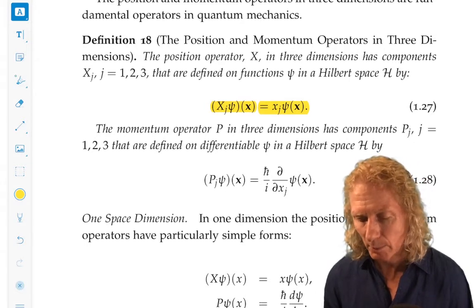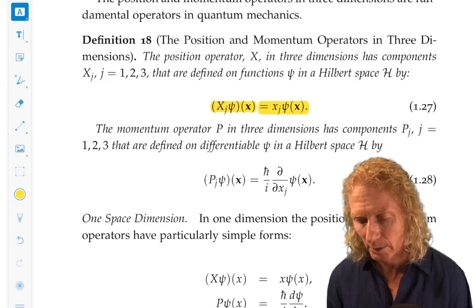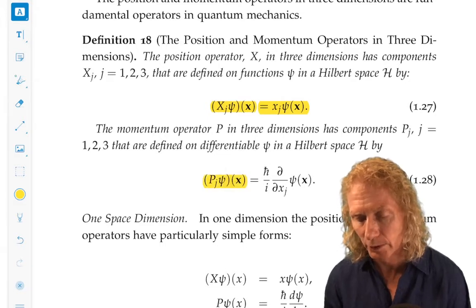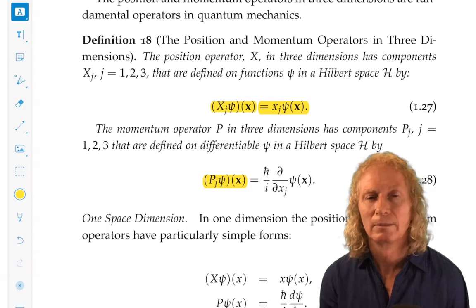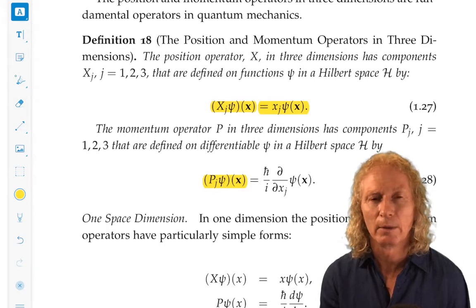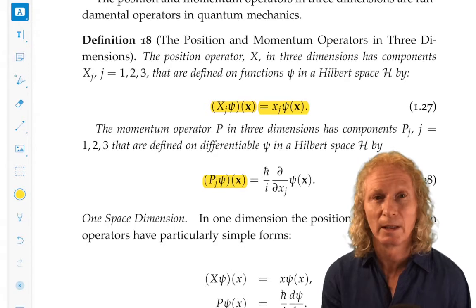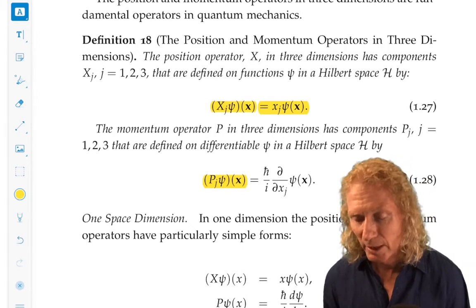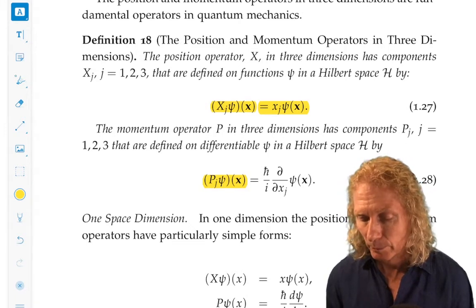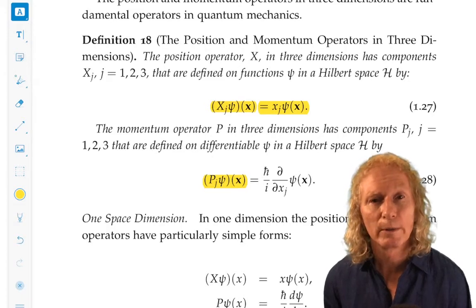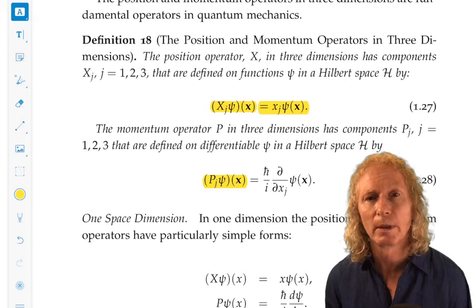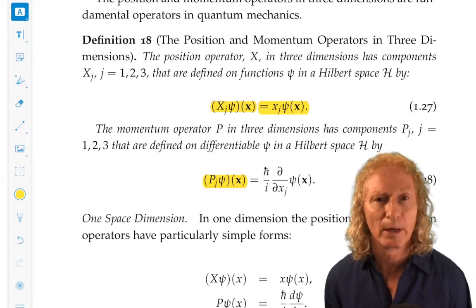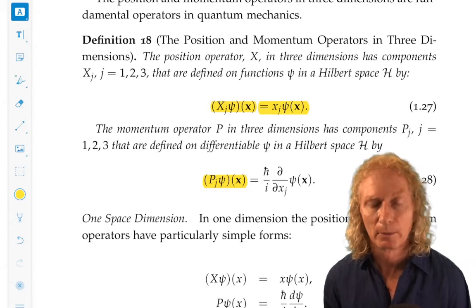Xj acting on psi of x is lowercase xj, it's just multiplication by the coordinate. The momentum operator is a little bit different. The jth component acting on the same function is h bar over i. This is where you can often get confused with i, the imaginary unit and index. I'm pretty careful about that. It's h bar over i times the partial derivative with respect to xj acting on psi of x, the complex valued function of three-dimensional space.